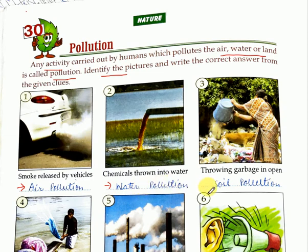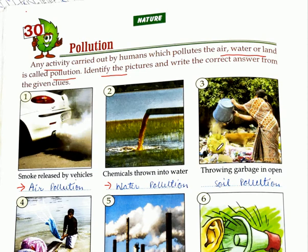Now third — you see children, this lady is throwing garbage in an open area. Because of this, what happens? It pollutes the soil, it pollutes the land. So the answer is soil pollution.